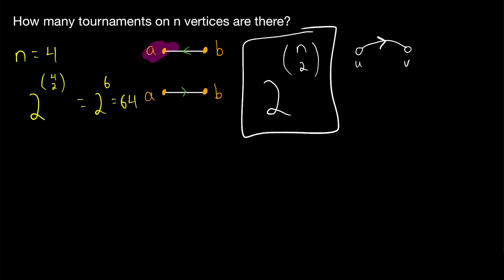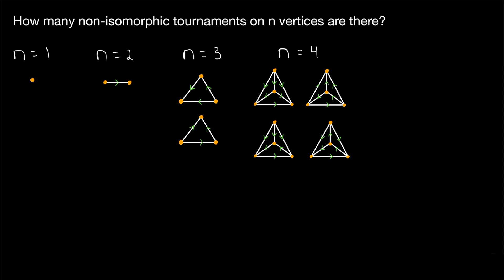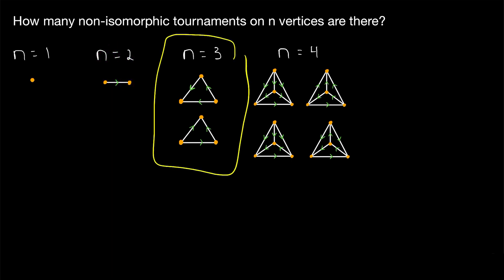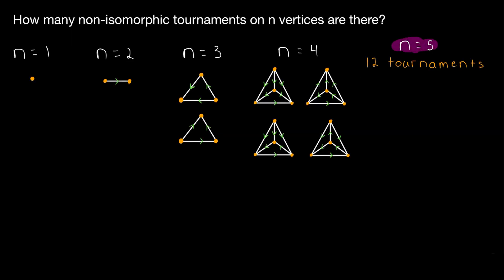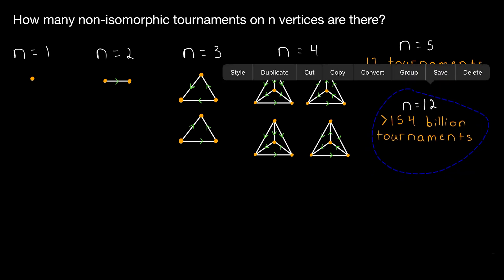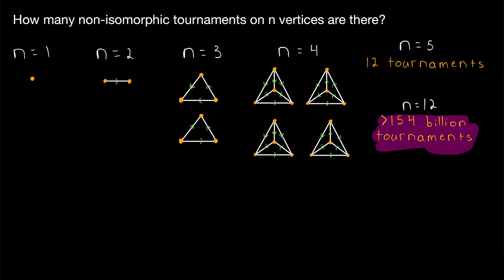We might also be interested in counting non-isomorphic tournaments — those with meaningfully different structures. Answering how many non-isomorphic tournaments exist on n vertices is considerably more difficult; there is no known formula for this. Here are the first few cases: when n equals 2 there is only 1 tournament; with 3 vertices there are 2; with 4 vertices there are 4; and with 5 vertices there are 12 non-isomorphic tournaments. These counts grow very quickly — if there are 12 vertices, there are more than 154 billion non-isomorphic tournaments.